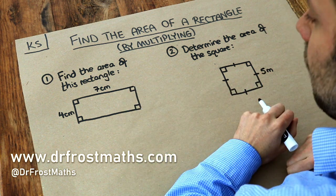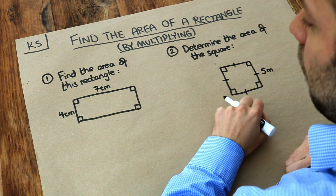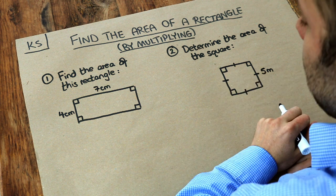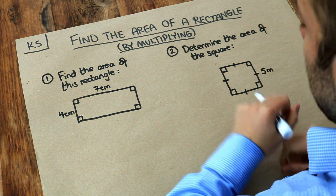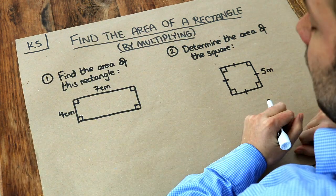Now we've got these two problems here. We've got a rectangle and we want to find its area, and we've got this square and we want to find its area. And remember the area of a 2D shape is the amount of space it takes up.